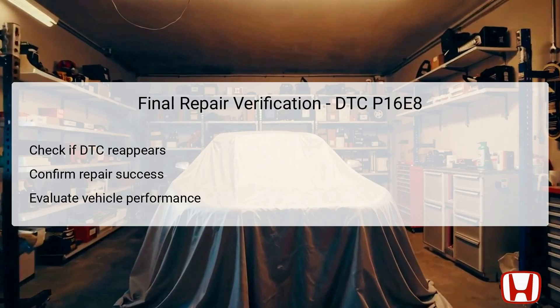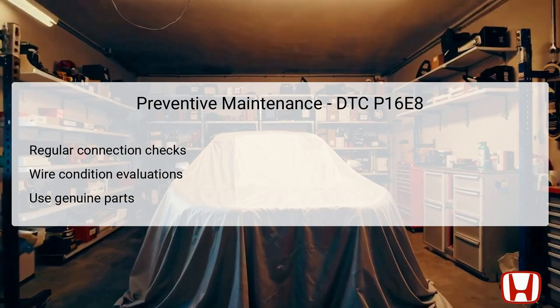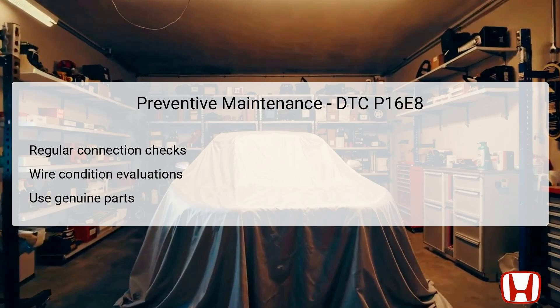To prevent recurrence of DTC P16E8 or similar communication errors, establish a routine maintenance schedule that emphasizes regular checks of all electrical connections and wiring components. Evaluating the physical condition of the wires can identify potential issues related to environmental wear, corrosion, or fatigue that could hinder the LIN function. Additionally, always opt for genuine Honda replacement parts, as these components are specifically designed to fit and function optimally within the vehicle's systems. Clean connectors during maintenance, ensuring no dirt or corrosion interfere with performance. Keeping a close eye on these aspects will enhance the longevity and reliability of the shutter grille and related connections.